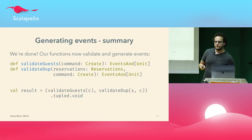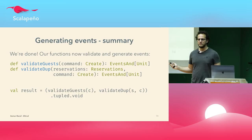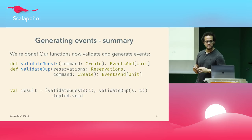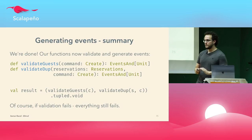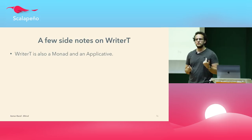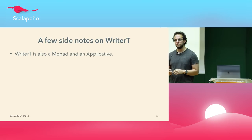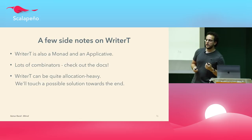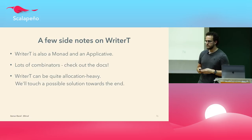Our functions now validate and generate events using the same tupled syntax — both doing validation and concatenating the list of generated reservation events. If validation fails, everything still fails and no events are emitted. WriterT is also a monad and applicative, so we can use the same combinators: for-comprehensions, mapN, leftShark, and rightShark. Do note that WriterT can be quite allocation-heavy — I'll reference a possible solution for this at the end of the talk.